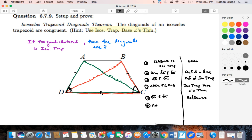So triangle A, D, C is congruent to triangle B, C, D because of side, angle, side. Very nice.